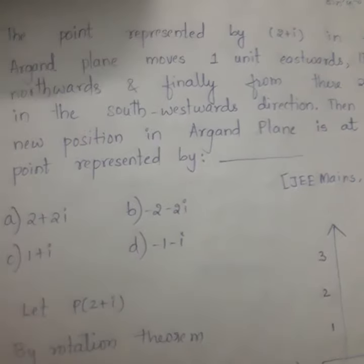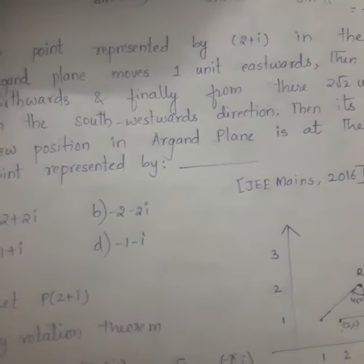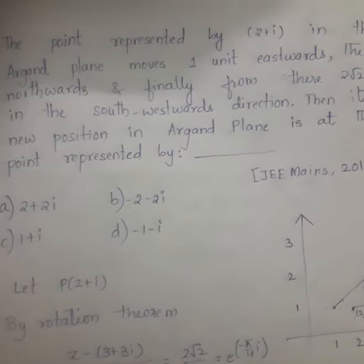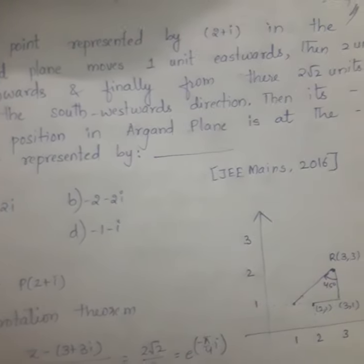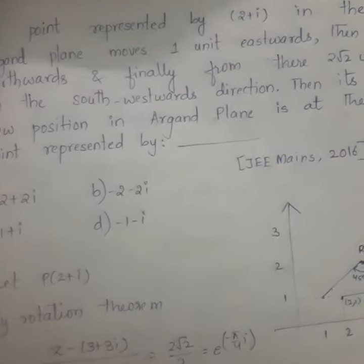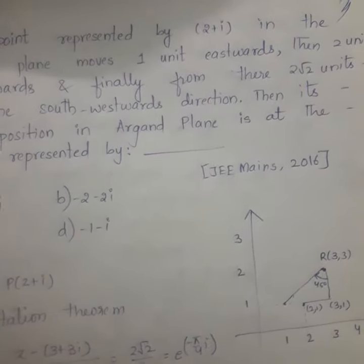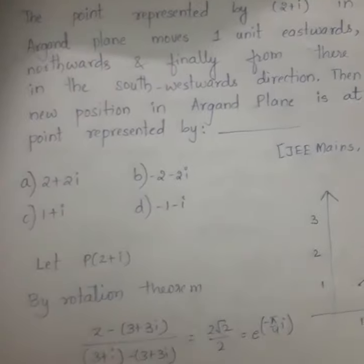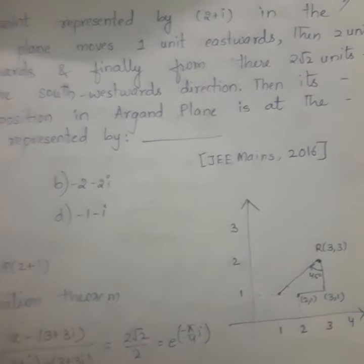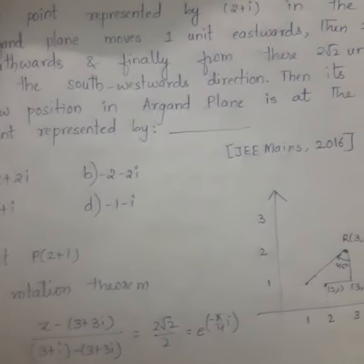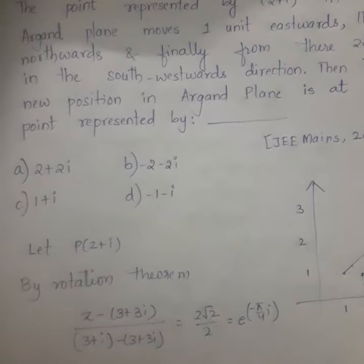The question says the point represented by 2 plus i in the Argand plane moves 1 unit eastward, then 2 units northward, and finally from there 2 root 2 units in the southwest direction. Then its new position in Argand plane is at the point represented by: